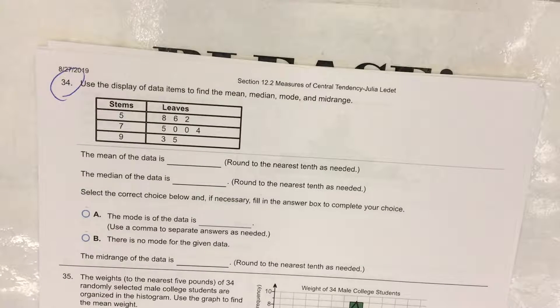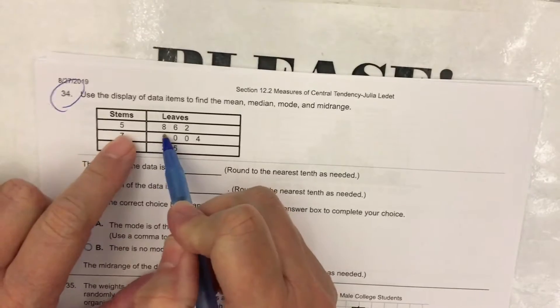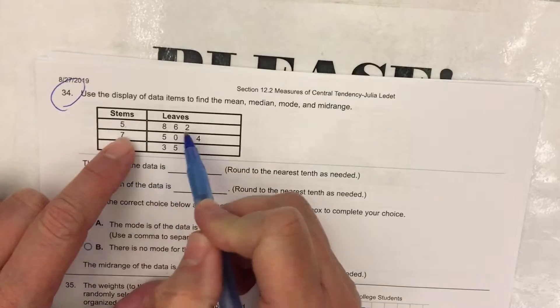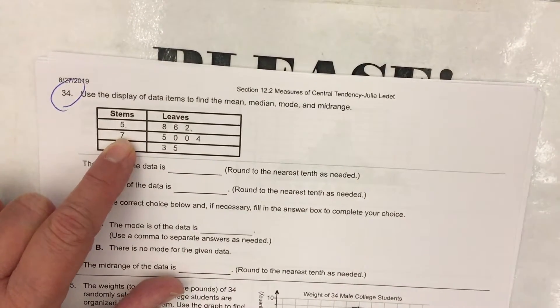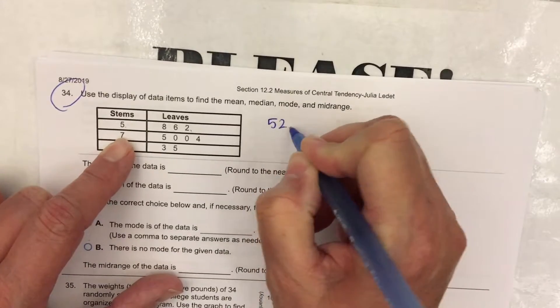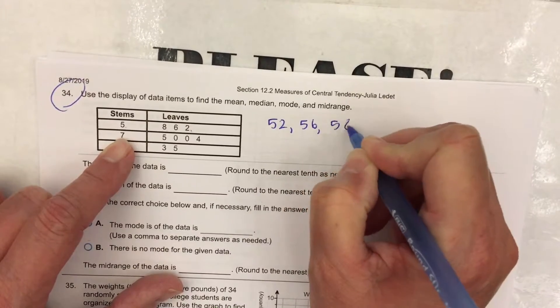You also have to look at the data and be able to pull it off the stem and leaf plot. So let's do that. As I look at the stem and the leaf, I have 58, 56, 52. Let's go ahead and put them in order because I'm going to need it in order for the median. So I'll write 52, 56, 58.